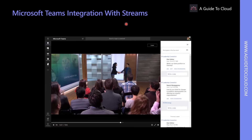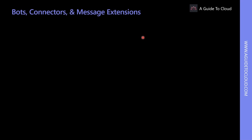Microsoft Stream is an enterprise video service where people in your organization can upload, view, and share videos securely. Users can collaborate using video by adding a Microsoft Stream channel or video as a tab in Microsoft Teams.